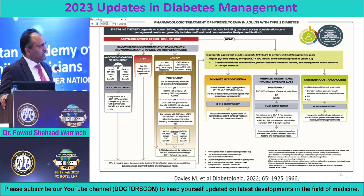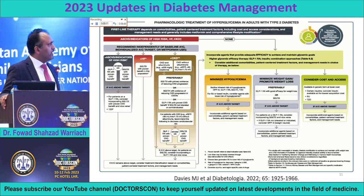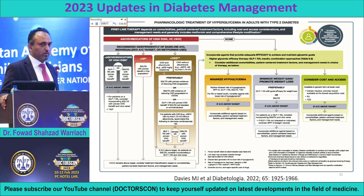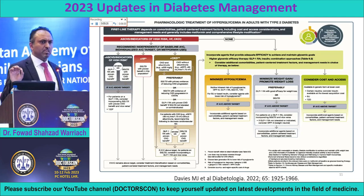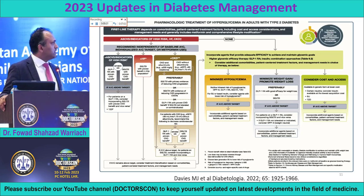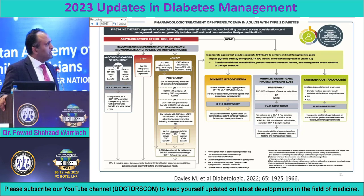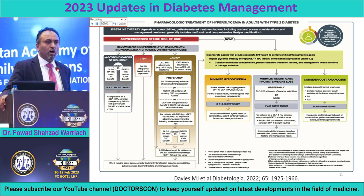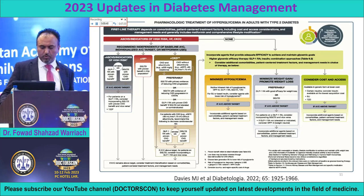Always divide your patient into at least four segments. One: the kidney — do they have CKD? As I said, normal creatinine does not exclude it. Proteinuria means yes, the patient has CKD. If the patient has been hypertensive for over five years, they have CKD even if the creatinine is normal. Second: does the patient have heart failure or atherosclerotic disease? The other one — not on this slide — is if the patient is obese. Always categorize your patient into these four segments when dealing with a diabetic patient.